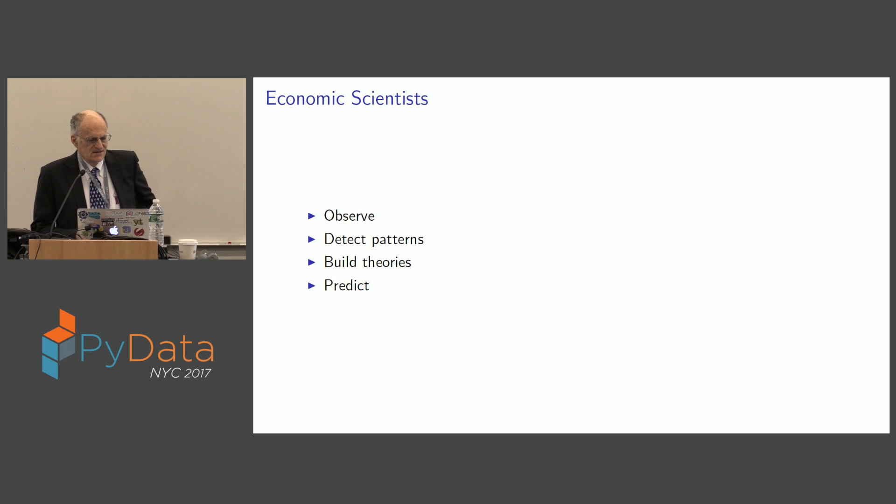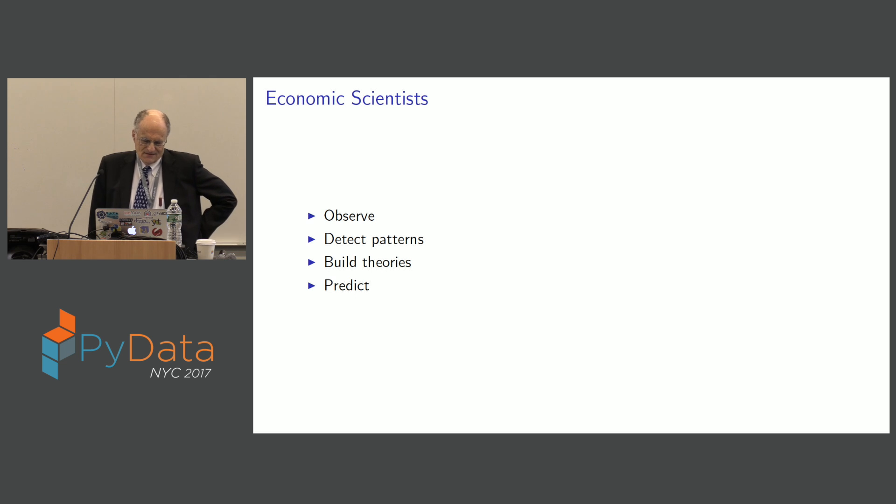So what do economic scientists do? And I could change economics to any kind of scientists. So four things. First, you observe. Collect some observations. Second thing you do is you detect patterns. Sometimes that involves imposing patterns. The next thing is you build theories to explain the patterns. And then the final thing you do is you predict. I'll come back to what you might mean by predict.